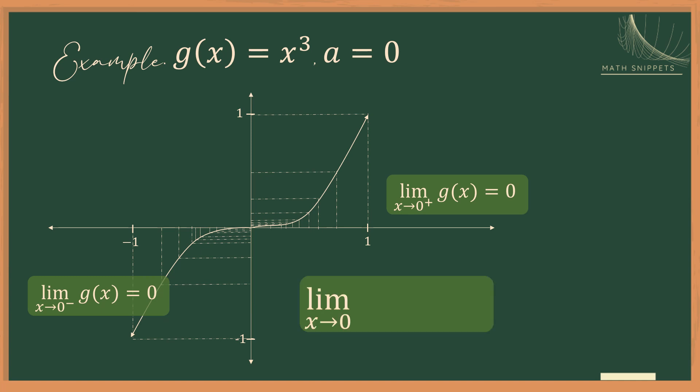So again, the left-hand and the right-hand limits are equal. So therefore, the limit of g as x approaches 0 is 0.